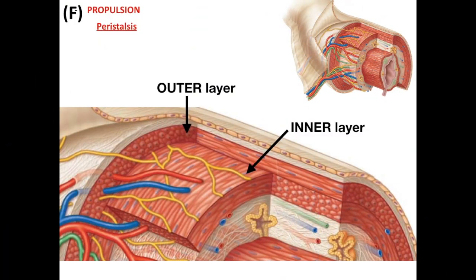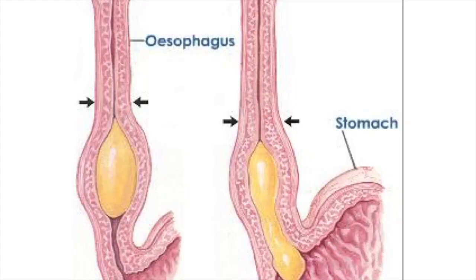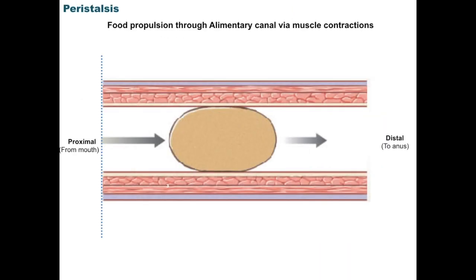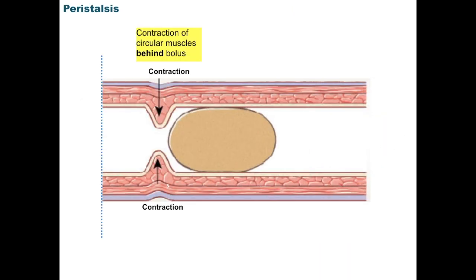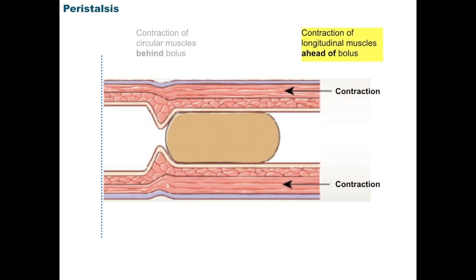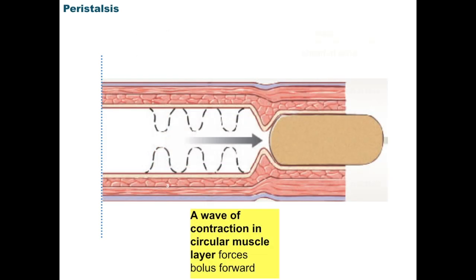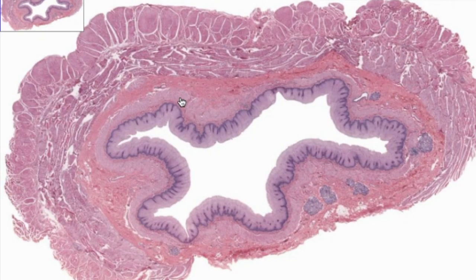The inner layer squeezes the gut tube, while the outer layer shortens the tube. So the muscularis externa is doing the primary job of the esophagus, pushing the food down toward the stomach by a wave of coordinated contraction and relaxation. This is how, in general, things will move throughout the gut tube. That's your esophagus — a muscular tube running down the back of your thoracic cavity.